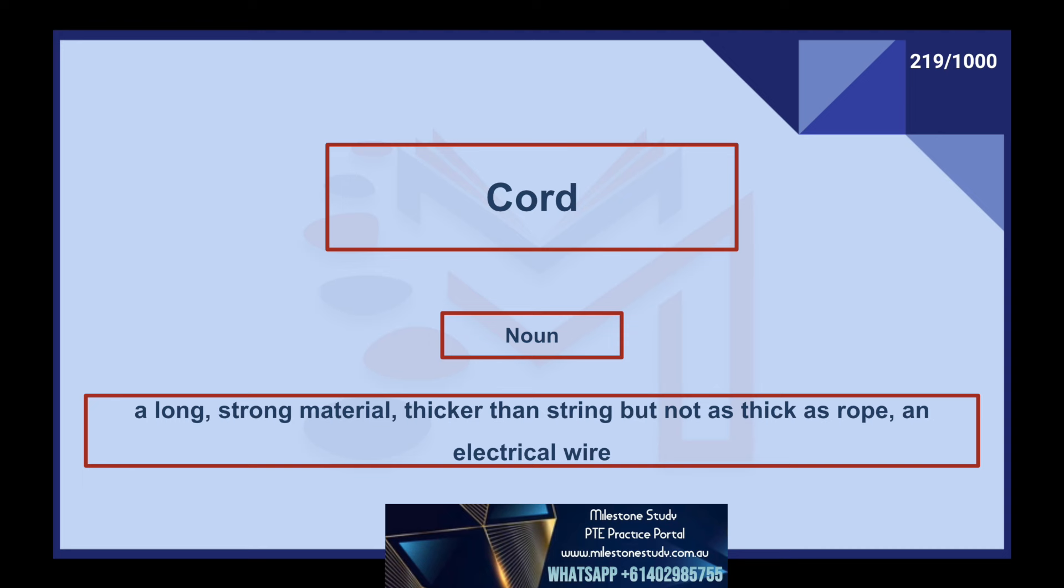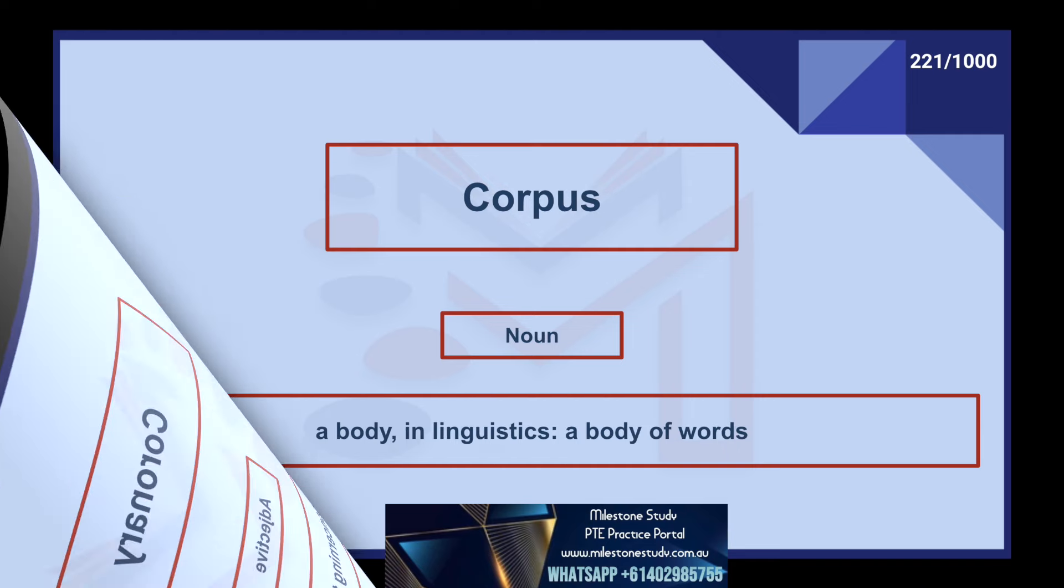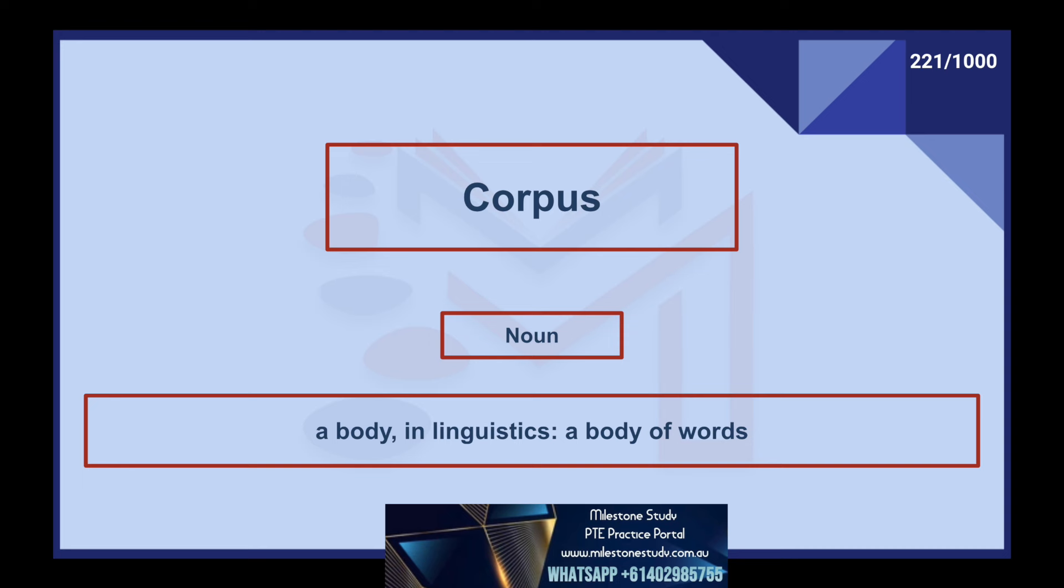Cord, noun: a long, strong material, thicker than string but not as thick as rope. An electrical wire. Cardiac, adjective: concerning the heart. Corpus, noun: a body. In linguistics, a body of words. Correction, noun: a change to make something right.